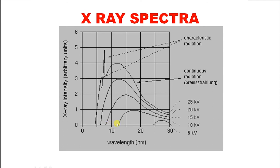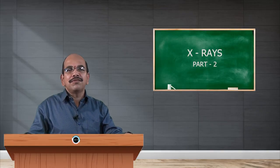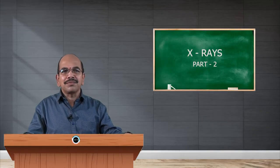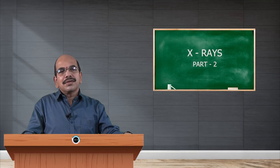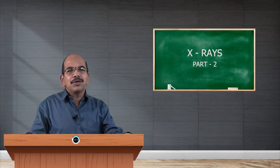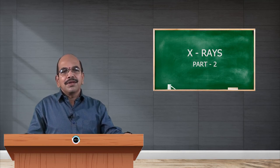For lower accelerating potentials, graph is continuous. We call it as continuous spectrum. For a particular voltage, say 25 kilovolt, graph is having some peak values. This is because of characteristic radiation. Now we will see what is the reason for this characteristic radiation and also the variation of this particular intensity with wavelength.